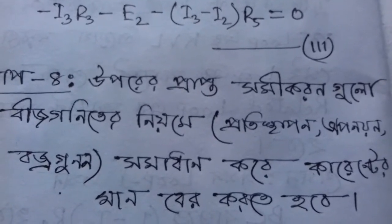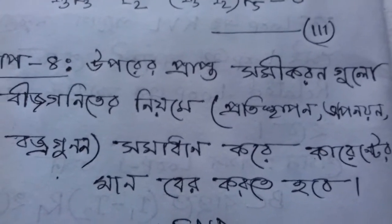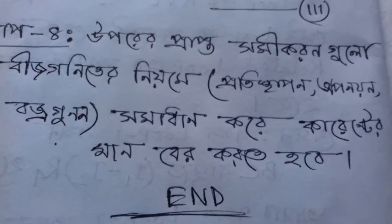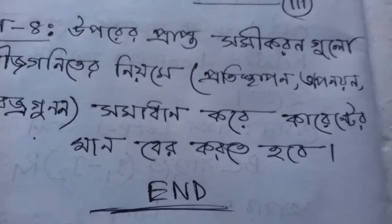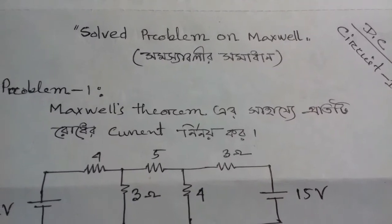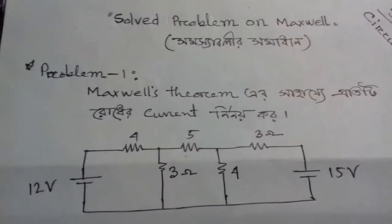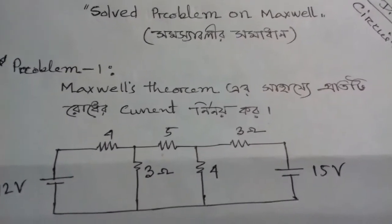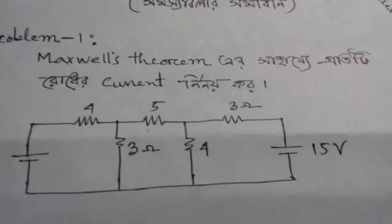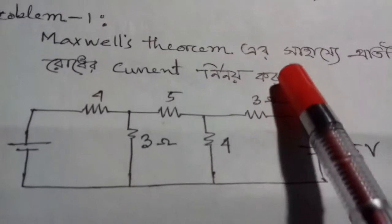These methods — substitution, elimination, matrix — make it easy to solve. The unknowns are i1, i2, i3. Now we have an example to solve: Maxwell's theorem applied to an active network. I am going to show you the next one.